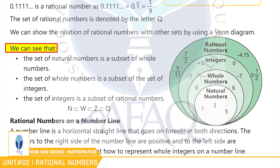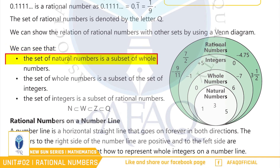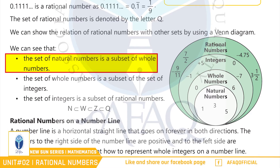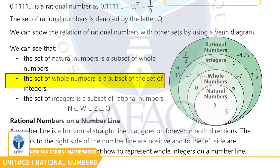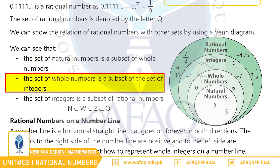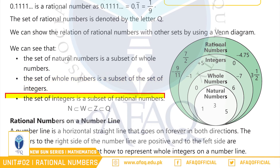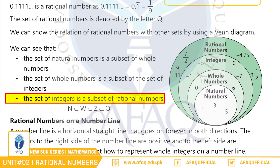ہم یہ دیکھ سکتے ہیں کہ the set of natural numbers is a subset of whole numbers. The set of whole numbers is a subset of integers. And the set of integers is a subset of rational numbers.